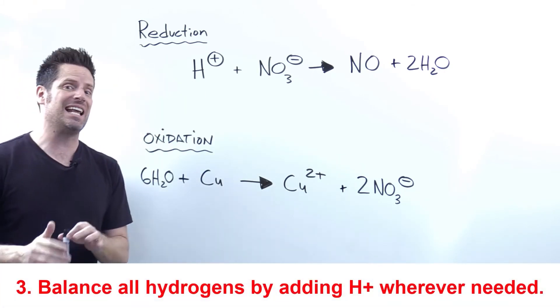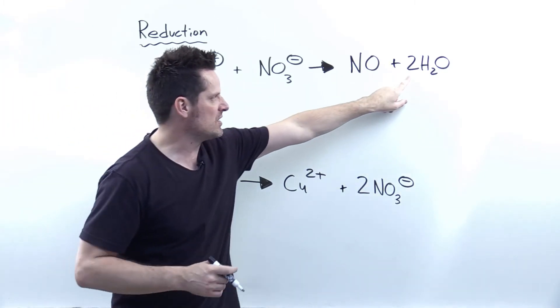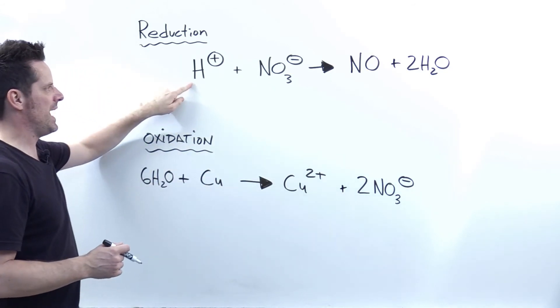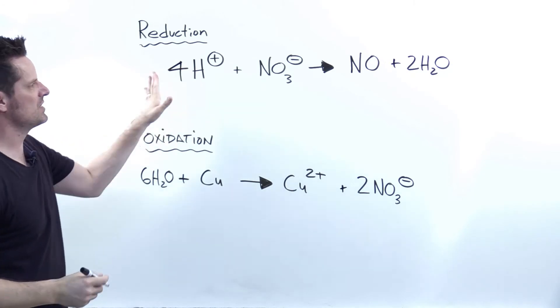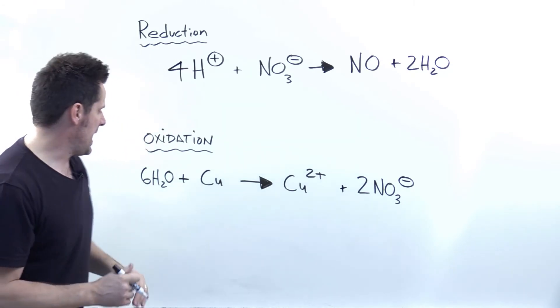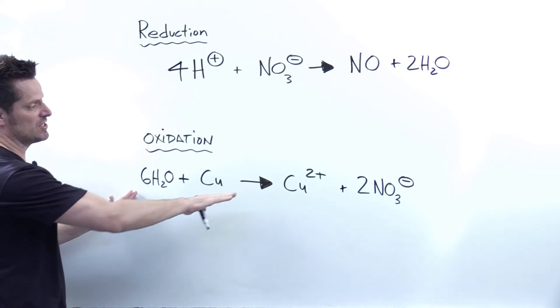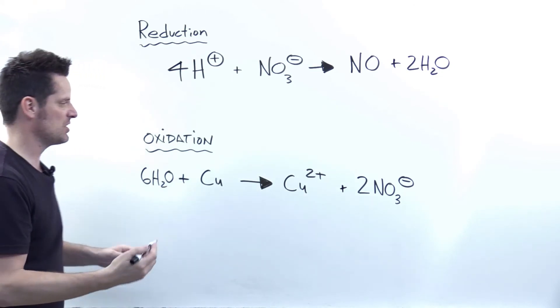I now have to balance hydrogen by adding H pluses wherever is necessary. In the top reaction, I have on the right side, two times two equals four hydrogens. And on the left, I only have one H plus. So I'm going to have to add a four coefficient right there, which I think balances out my hydrogens. In the bottom reaction, I've got six multiplied by two is 12 hydrogens on the left and zero hydrogens on the right. So I'll balance that by adding 12 H pluses to the right.